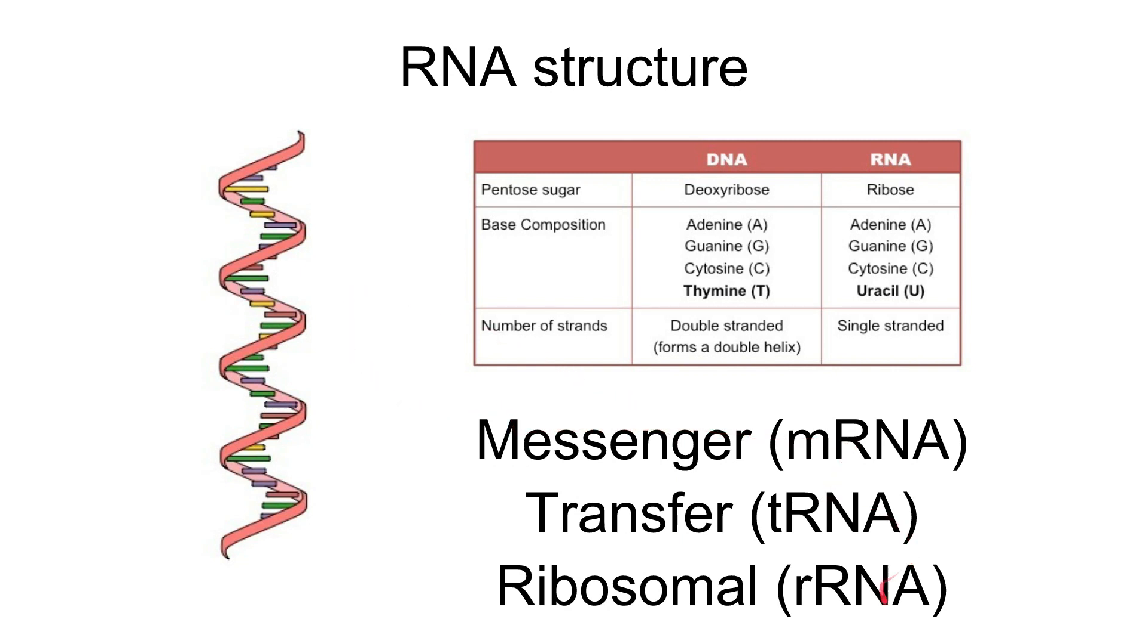As well as knowing that we have three types of RNA—messenger, transfer, and ribosomal—it's important to be able to describe the differences between RNA and DNA. Firstly, RNA is single-stranded. You can see here we have our single helix making up RNA, and this is most commonly shown to represent messenger RNA. RNA is also much, much shorter than DNA. For example, DNA could be millions of nucleotides long, whereas the longest type of RNA, which is messenger RNA, doesn't really get past tens of thousands of nucleotides in length.